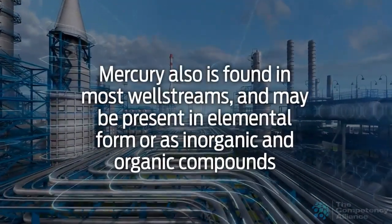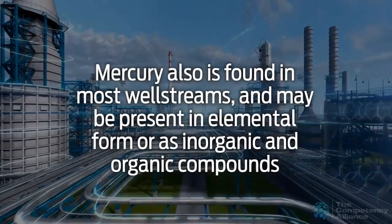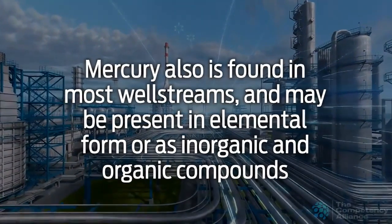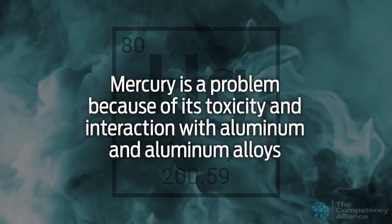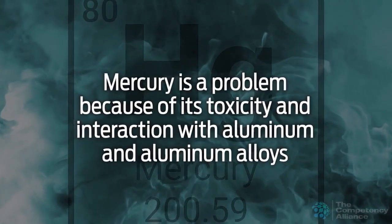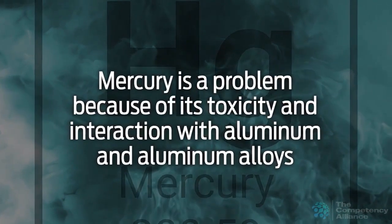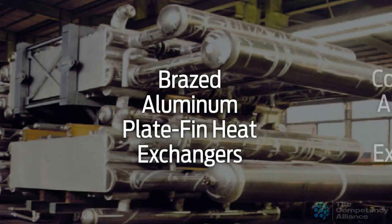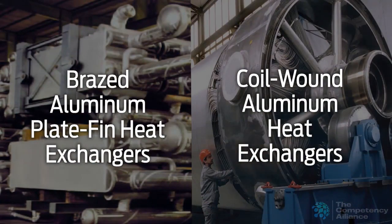Mercury also is found in most well streams and may be present in elemental form or as inorganic and organic compounds. From a gas processing viewpoint, mercury is a problem because of its toxicity and interaction with aluminum and aluminum alloys. Brazed aluminum plate fin heat exchangers (BAHX) are widely used in low-temperature gas processing plants, and coil-wound aluminum heat exchangers are widely used in LNG liquefaction plants.